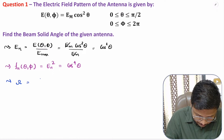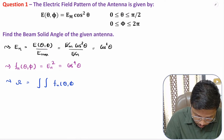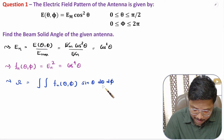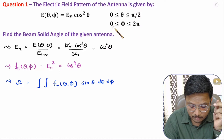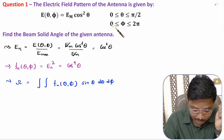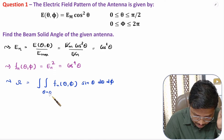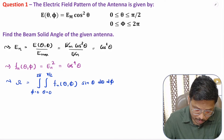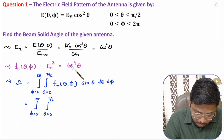Beam solid angle is the solid angle integration of the function: ∫∫ f(θ, φ) sin(θ) dθ dφ. The limits of θ and φ are given to us: θ ranges from 0 to π/2 and φ ranges from 0 to 2π. If the limits are not given, then consider θ ranging from 0 to π and φ from 0 to 2π. The function is cos⁴(θ), and since cos⁴(θ)·sin(θ) is independent of φ, we can separate the integrations of θ and φ and multiply them.